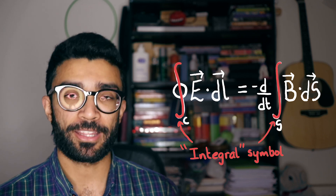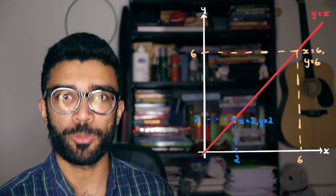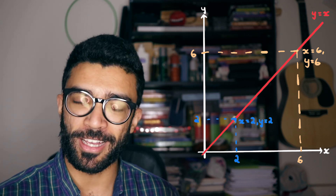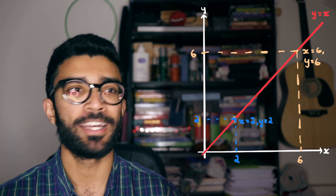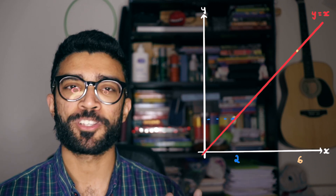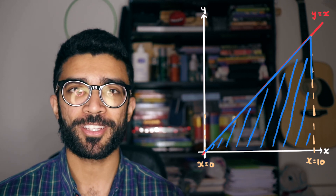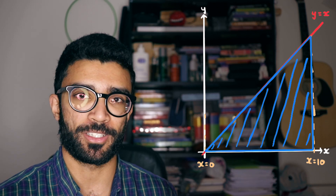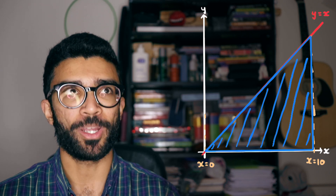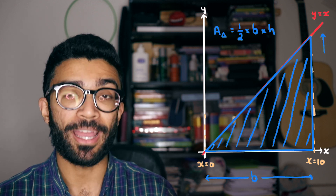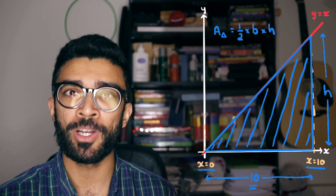To explain the integral, let's first imagine that we're dealing with the mathematical function y equals x, one of the simplest functions we can think of. This function is such that whatever the x value at a particular point along that line, the y value is exactly the same as the x value, and this is true along the entire length of the line. Now let's imagine that we want to find the area underneath this line and above the x-axis, and we say x is equal to 10. So now what we've drawn is a shaded triangle.